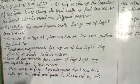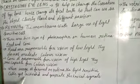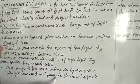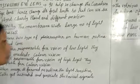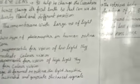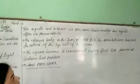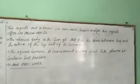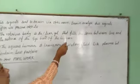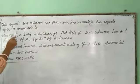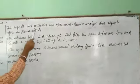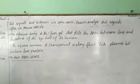When images form on the retina, the light-sensitive cells get activated and generate electrical signals. These electrical signals are sent to the brain via the optic nerves. The brain analyzes these signals and we perceive the object.